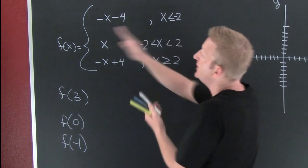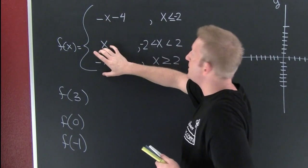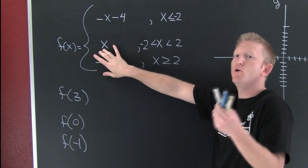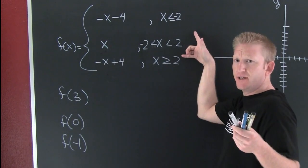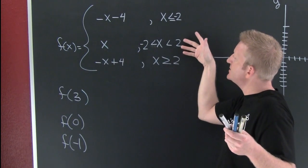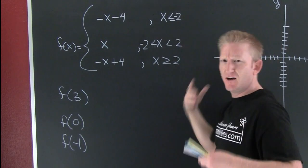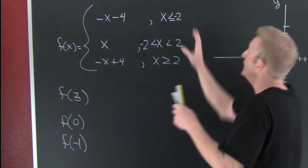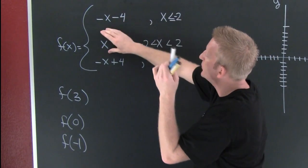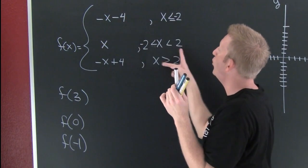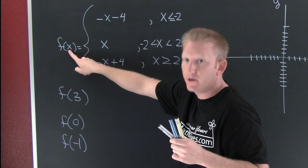A piecewise defined function is a function that has several different pieces. What separates these pieces? The on and off switches over here — these domain conditions tell us which piece we're going to use when our input values are different.